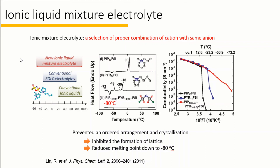However, it is very hard to find a cation and anion pair with a very low melting point. So in order to decrease the melting point, the option is to make an ionic liquid mixture. PIP-13 FSI has a melting point of 6 degrees C and PYR-14 FSI has a melting point of negative 18 degrees C. When mixing these two ionic liquids, the melting point decreases to negative 80 degrees C. This is because selecting a proper combination of cations with the same anion prevents ordered arrangement and crystallization, thereby inhibiting the formation of a lattice. PIP-13 FSI is the most important part of this ionic liquid mixture.